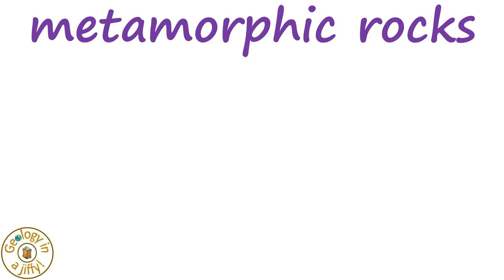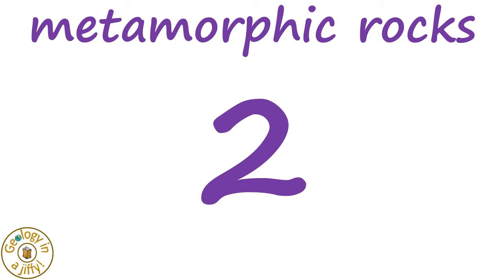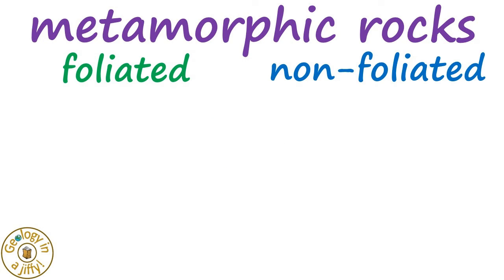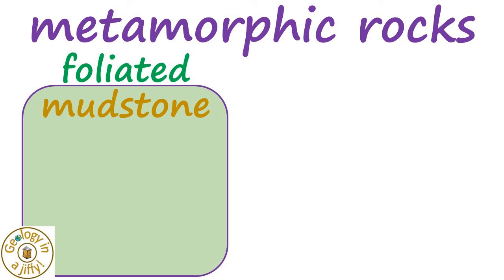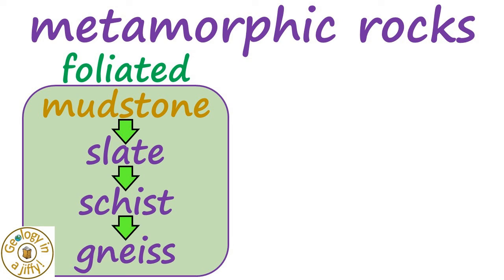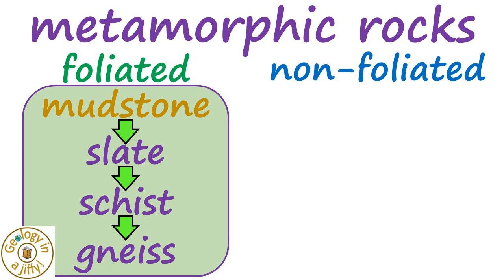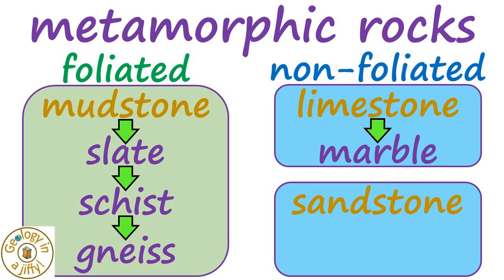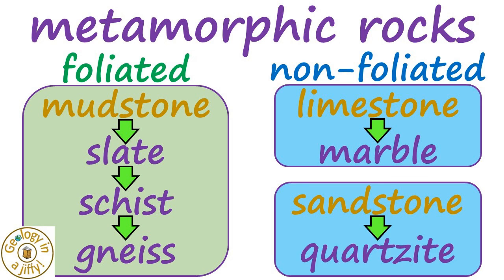In summary, metamorphic rocks can be divided into two groups, being foliated and non-foliated. The foliated rocks, such as mudstone, are metamorphosed into slate, then into schist, and then into highly metamorphosed gneiss. The non-foliated metamorphic rocks include the original limestone being metamorphosed into marble, and sandstone into quartzite.